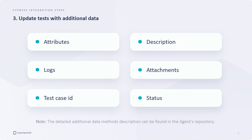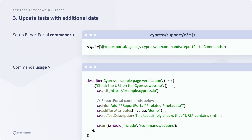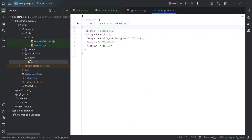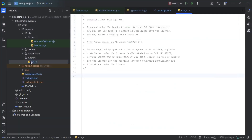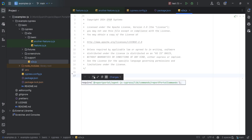Comprehensive details about the data and ways to edit are available in the agent's documentation. To implement data attaching methods, some adjustments in configuration are required. In a Cypress support directory, we need to add an e2e.js file with custom Report Portal commands. These commands are similar to native Cypress commands and can be used in the same way. I already have this file in the project and I will just put the necessary require call here.